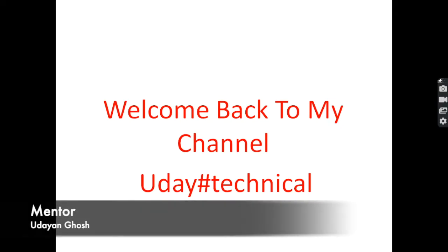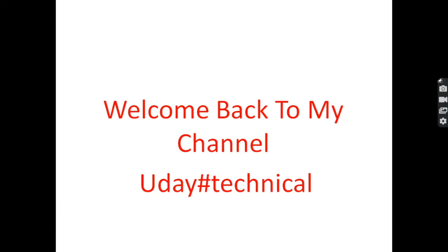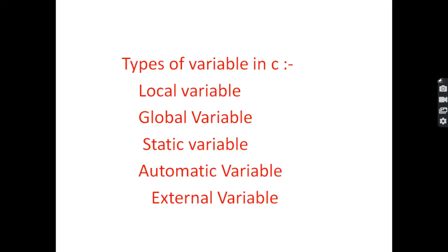Hello everyone, welcome back to my channel UdayHashtagTechnical. Today we will discuss types of variables in C: local variable, global variable, static variable, automatic variable, and external variable. We will know what each one is and discuss them with programs in C. So, let's get started.